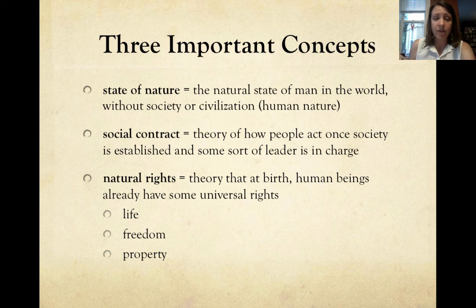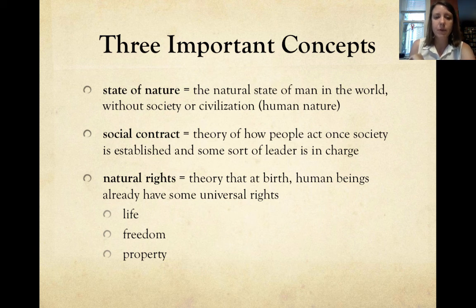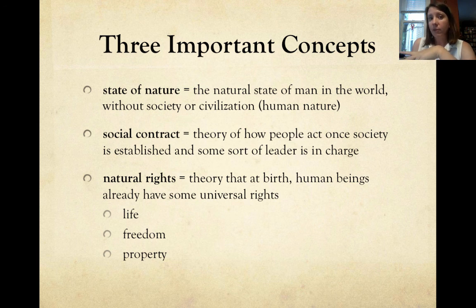The next concept is the social contract — some sort of agreement people form when they come together to create a society or civilization. This is the theory of how people act once a society is established and some sort of leader or group of leaders is in charge. The idea is that you give up some things from the state of nature as part of this social contract. And then there's natural rights — the theory that at birth human beings already have universal rights. The three big ones are life, freedom (also known as liberty), and property. No one should be able to take your life, your freedom, or your possessions — possessions are part of our natural state.